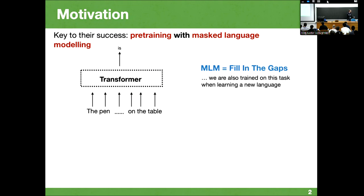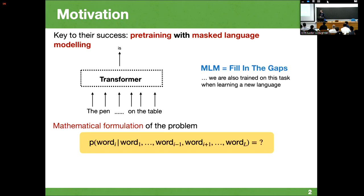Masked language modeling is a self-supervised task in which one starts with a big dataset of many sentences. In each of these sentences, one or more words are randomly masked out, and the transformer is trained at predicting them by looking at the rest of the sentence. While performing this task, you can see that the transformer actually learns how to solve many other different tasks, for example how to answer questions. We are also trained on this task when learning a new language.